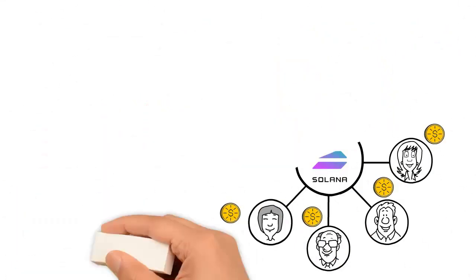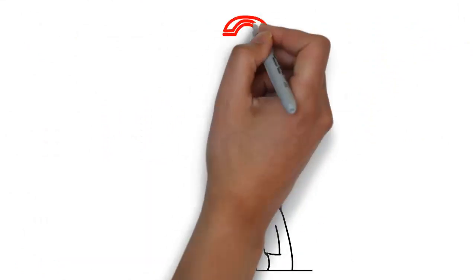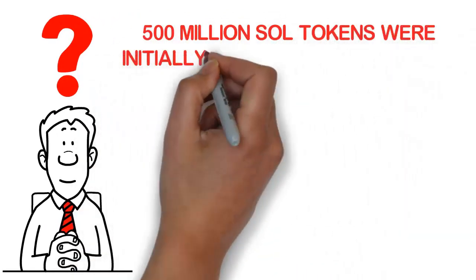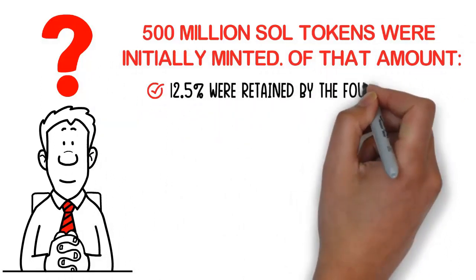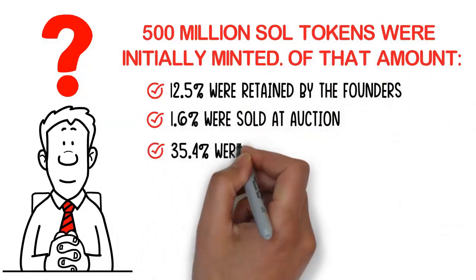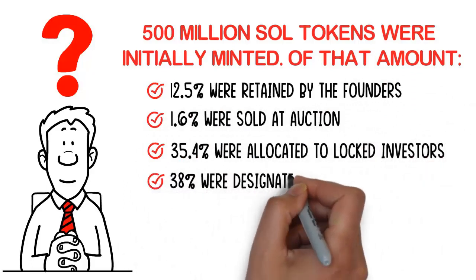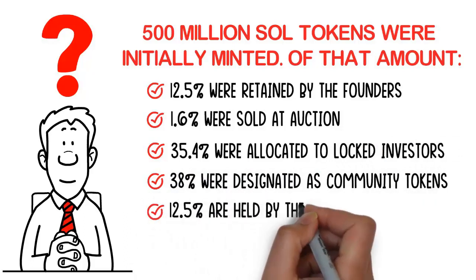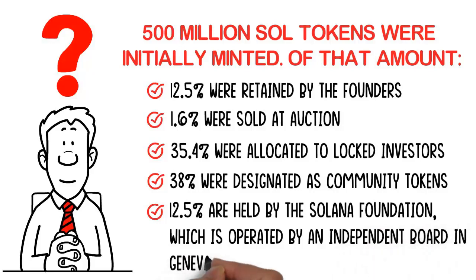So let's talk tokenomics for a second. How many Solana tokens are there? Who owns them? Well, 500 million SOL tokens were initially invented. Of that amount, 12.5% were retained by the founders, 1.6% sold in auction, 35.4% were allocated to locked investors, and 38% were designated as community tokens. And finally, 12.5% are held by the Solana Foundation, which is operated by an independent board in Geneva, Switzerland.